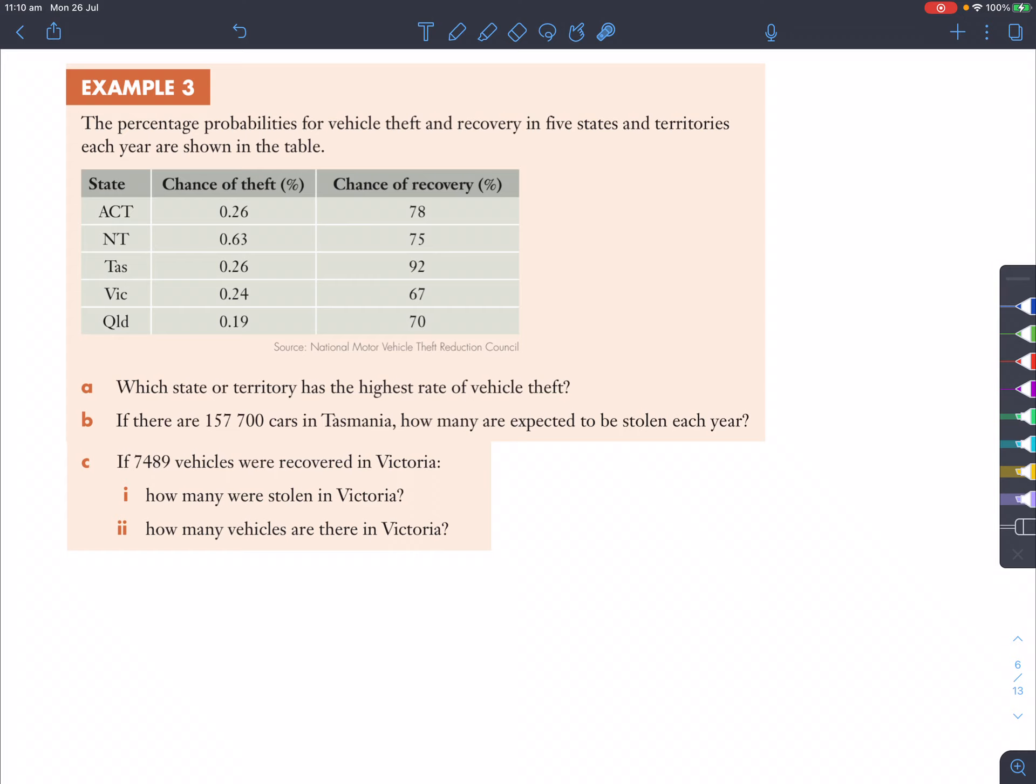So in example three, the percentage probabilities for vehicle theft and recovery in five states and territories each year are shown on the table. Which state or territory has the highest rate of vehicle theft? Well, if you have a look at the percentage here, this has the highest, so it's Northern Territory, which has the highest percentage of theft.